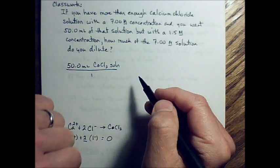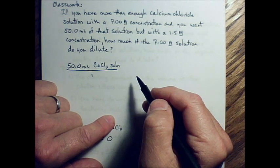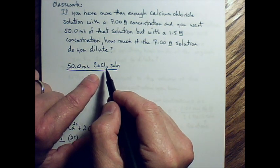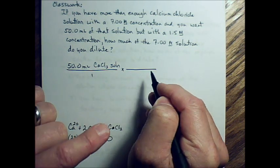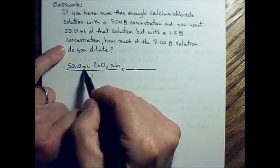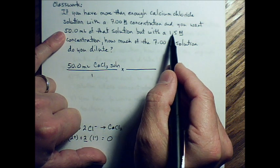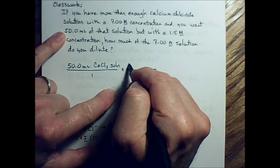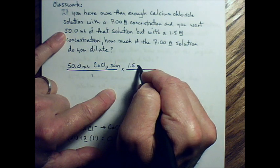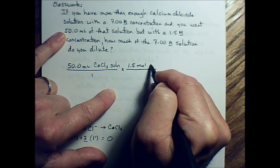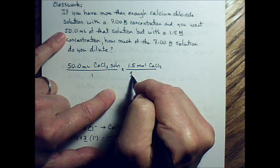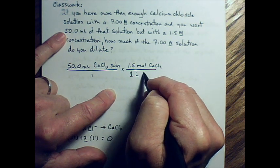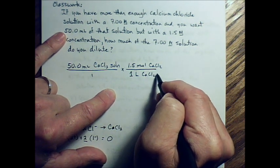Then we want to take the concentration of this solution, and we're going to break it into separate parts in a fraction. So the concentration of this solution is 1.5 molar, which is 1.5 moles of the solute, calcium chloride, in one liter of the calcium chloride solution.